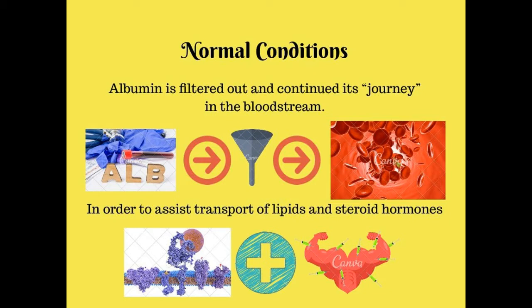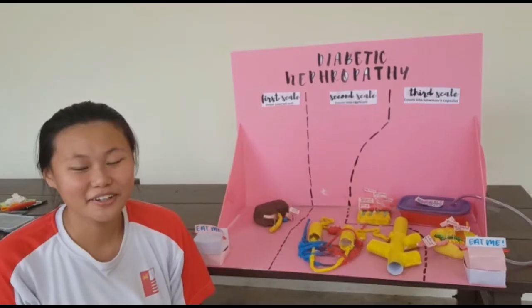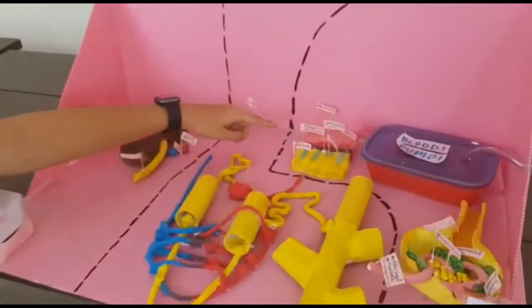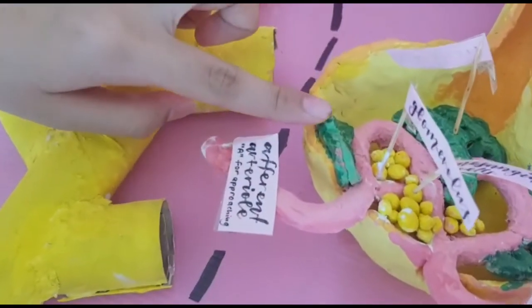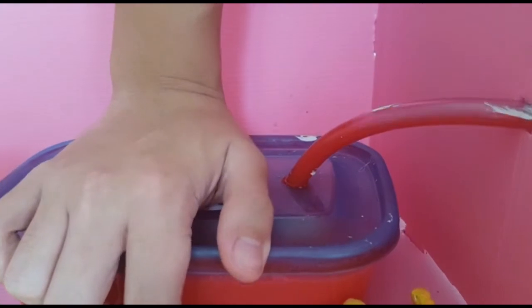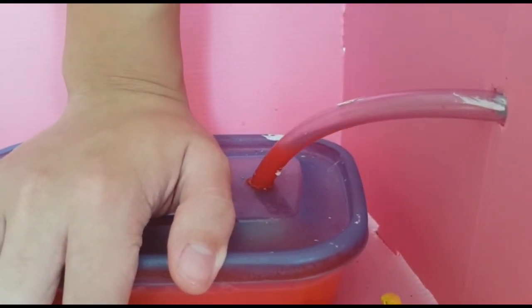Under normal conditions, albumin would have remained in the bloodstream, where it belongs, in order to assist in the transport of lipids and storage hormones. In conclusion, the key abnormalities in diabetic nephropathy are a thickened basement membrane, mesangial expansion, and the disruption of podocytes. Eventually, these collective changes damage the glomerulus to such an extent that it is unable to filter blood properly. In the very end, the amount of blood filtered per minute decreases dramatically. This is how diabetes causes diabetic nephropathy.